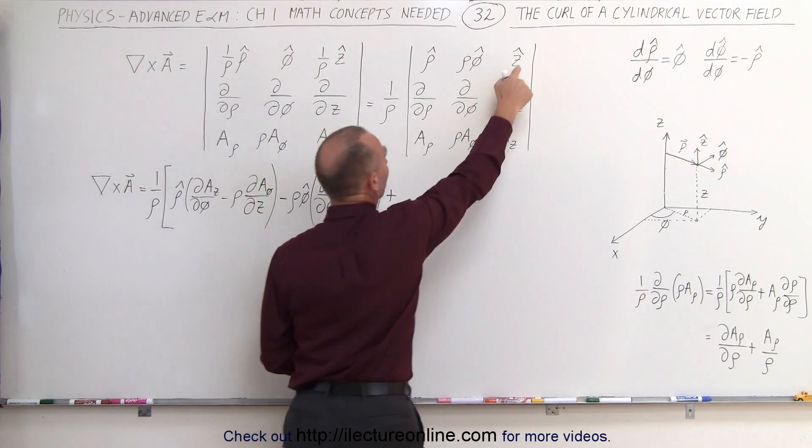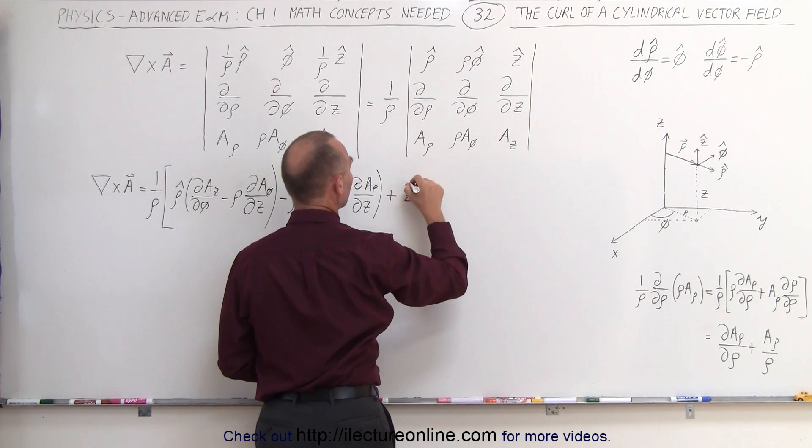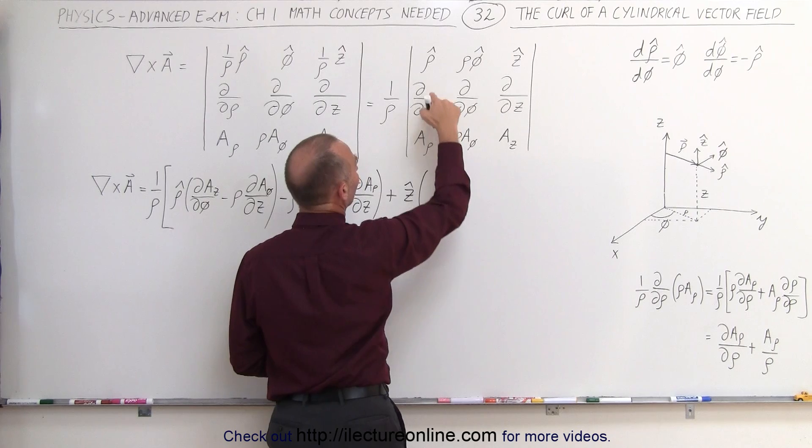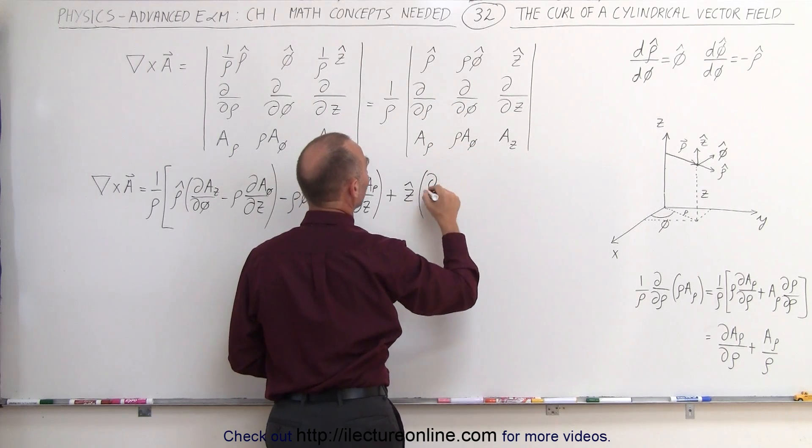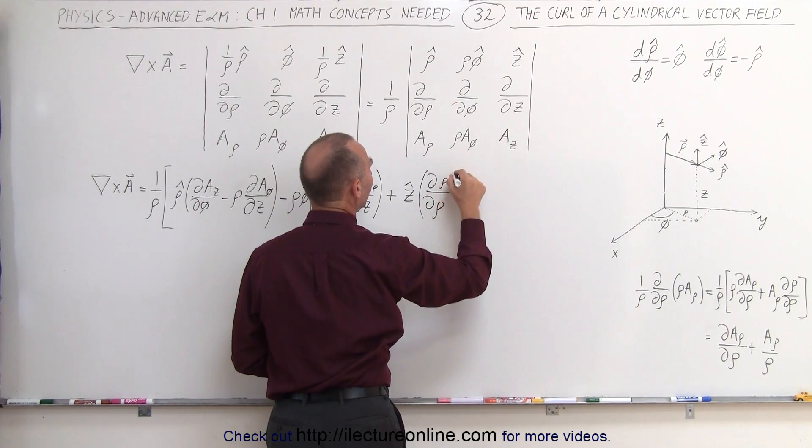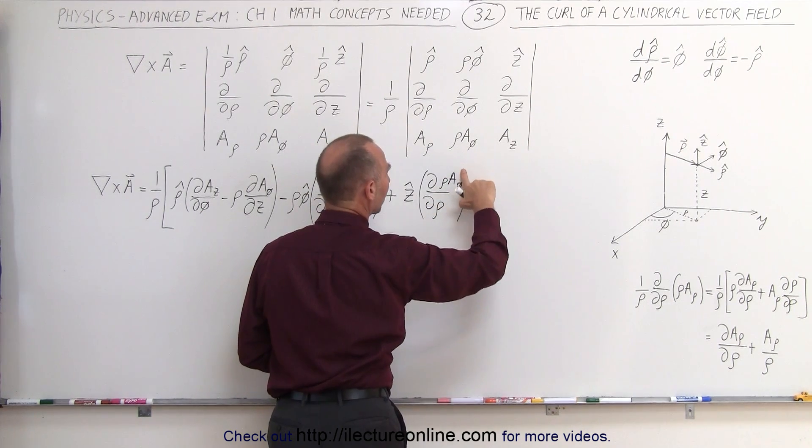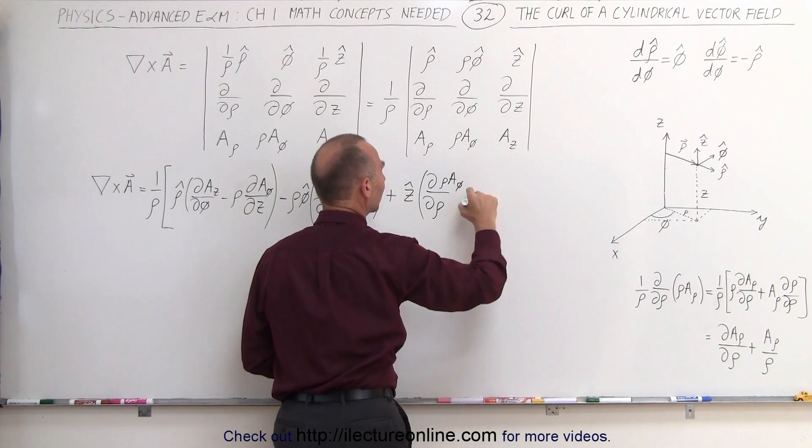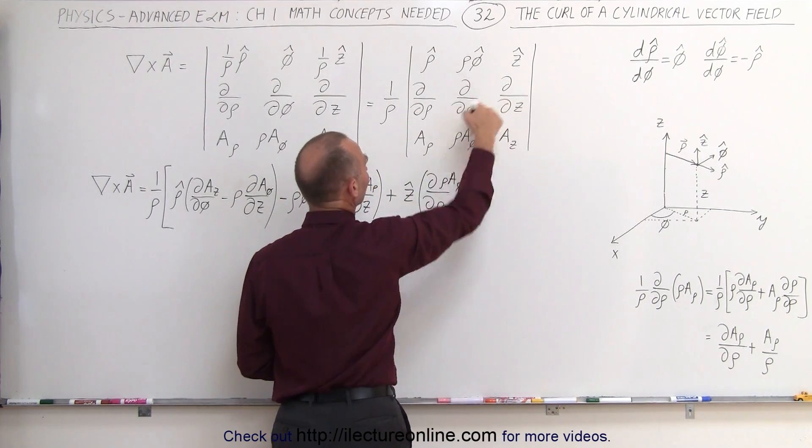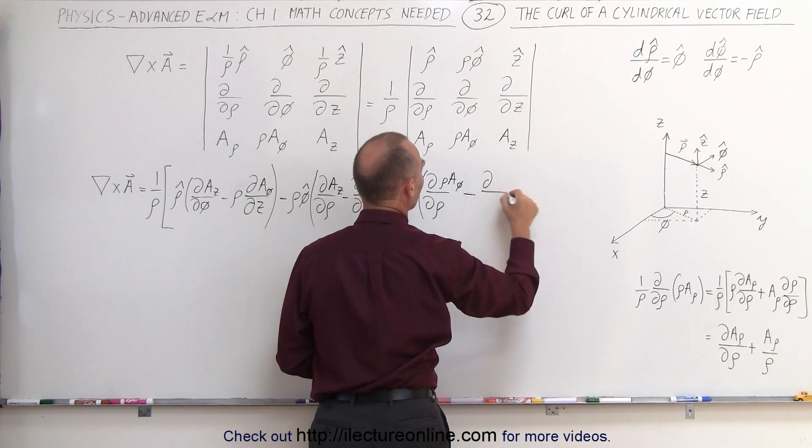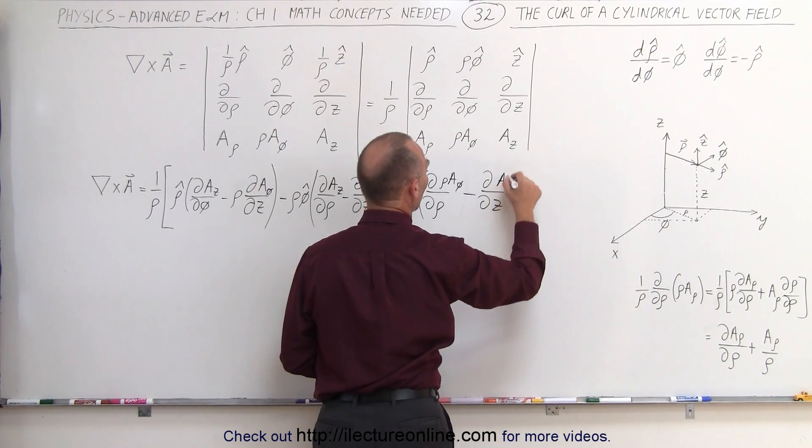And then plus the third unit right here, which is the z unit vector, times, we have this times this, so the partial of row, of row times a sub phi, which is the additional way of writing this, I don't want to close the parenthesis yet, because I now have to subtract from that, minus this times this, which is the partial with respect to z of a sub row.